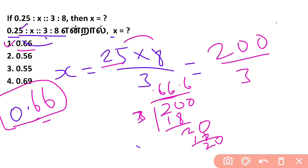We can see that's the exact answer. So what we do is get the x value. This equation says that 0.25 is a 3-number. If you put it in 3, you can define it.